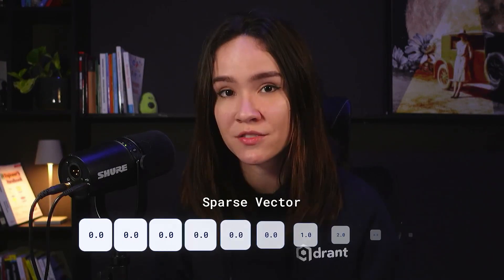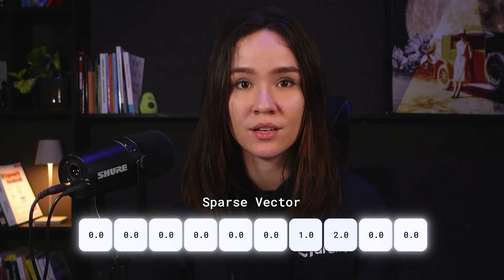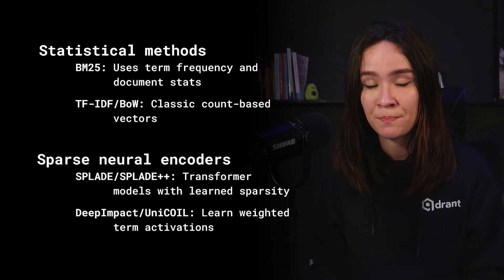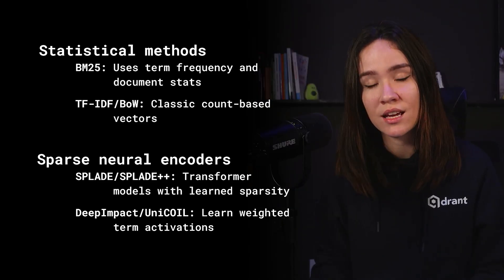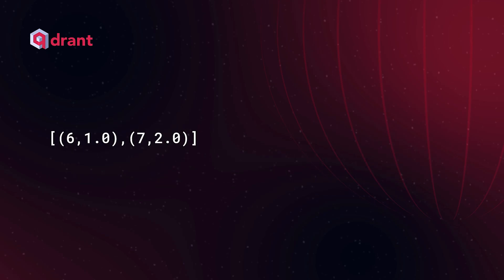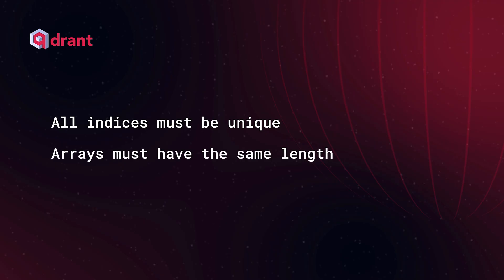Even though dense vectors are the most used in vector search because of their incredible similarity search properties, they're not the only type of vector we can work with. We can also work with sparse vectors, which are high-dimensional vectors where most of their values are zero. These types of vectors are usually generated by statistical methods like BM25 or sparse neural encoders like SPLADE. They're very useful if we want to apply keyword search and use techniques like hybrid search. We can represent a sparse vector by the indices of non-zero values and the value of each index — all indices must be unique and both arrays must have the same length.